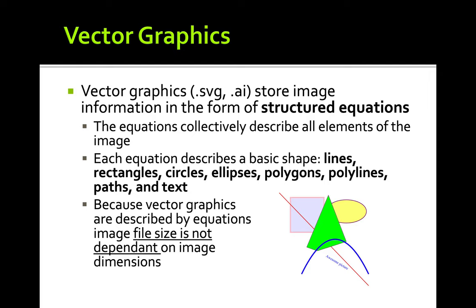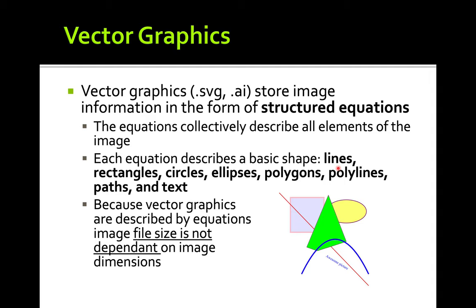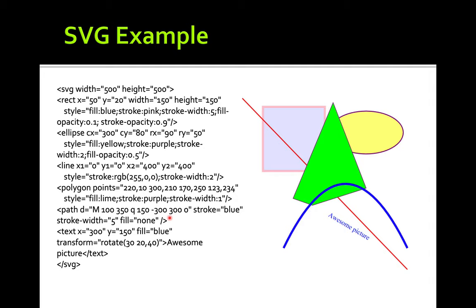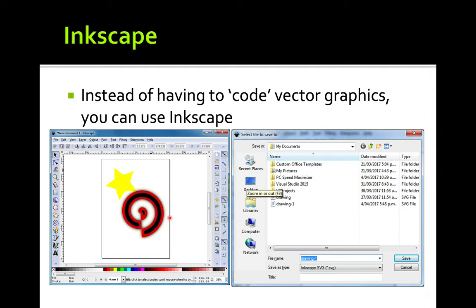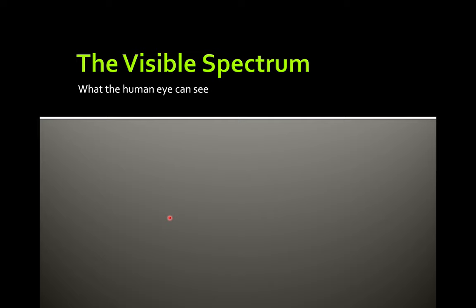Last time we talked about scalable vector graphics. We saw different basic shapes used in vector graphics: lines, rectangles, circles, ellipses, polygons, polylines, paths, and text. We also looked at Inkscape, an open-source software which can help you create scalable vector graphics.